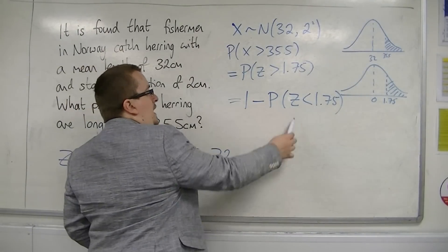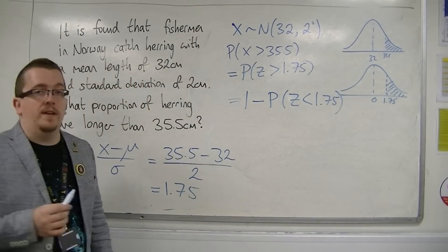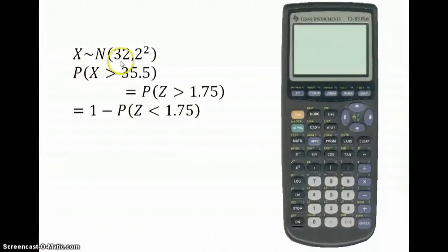So I'm now going to show you how to do this on the calculator. We have this mean of 32 and a variance of 2 squared, and we're looking for the probability that x is greater than 35.5. We've found the z statistic to be 1.75, so we're actually looking for the probability of z being greater than 1.75.